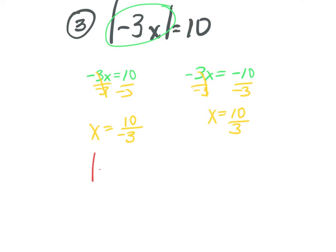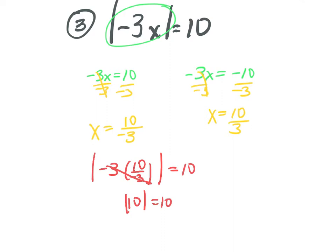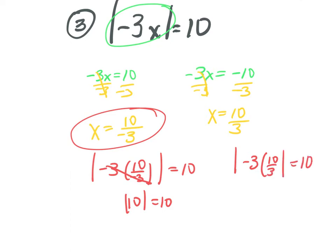I have to make sure those work, so I go back to the original. Absolute value of negative 3 times 10 over negative 3: the 3s cancel, so I have the absolute value of 10, which equals 10. Now check the other: absolute value of negative 3 times 10 over 3 — 3s cancel, giving negative 10. Absolute value of negative 10 equals 10. Yes, so we're good to go.